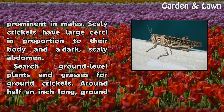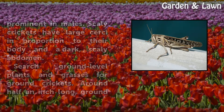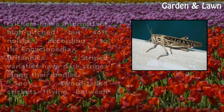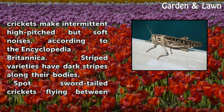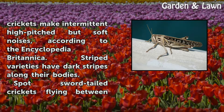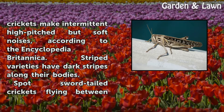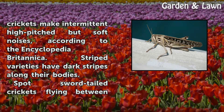Search ground-level plants and grasses for ground crickets. Around half an inch long, ground crickets make intermittent high-pitched but soft noises, according to the Encyclopedia Britannica. Striped varieties have dark stripes along their bodies.